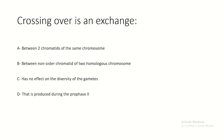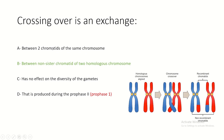Crossing over is an exchange between non-sister chromatids of two homologous chromosomes - not between two chromatids of the same chromosome. It has a major effect on diversity. It is produced during prophase I, not prophase II.